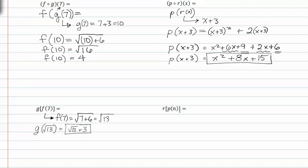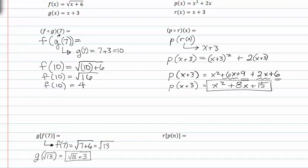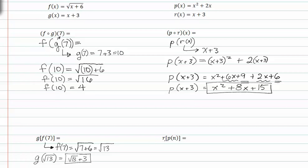In this second part, we do the opposite. We find r of p of x. This means we need to find p of x first.